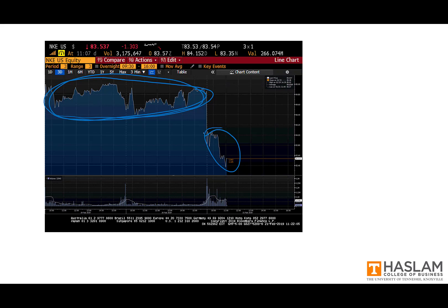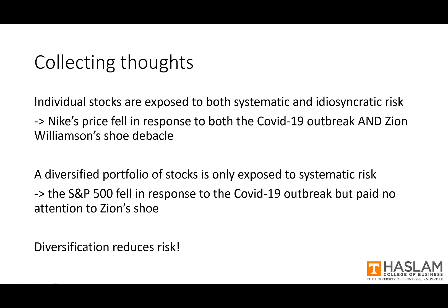Was Facebook down? No. What about the rest of the S&P? No. The shoe event was specific to Nike — it was idiosyncratic. Individual stocks are exposed to both systematic risk and idiosyncratic risk: Nike's price fell in response to both the COVID-19 outbreak and Zion Williamson's shoe debacle. A diversified portfolio, on the other hand, is only exposed to systematic risk. The S&P 500 clearly fell in response to COVID-19, but it paid no attention whatsoever to Zion's shoe.